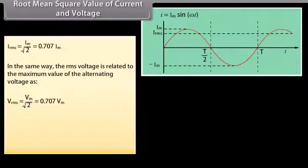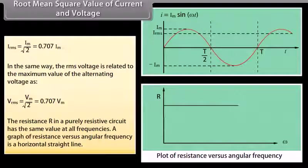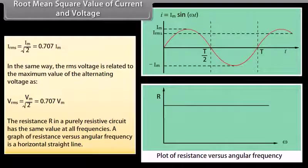In the same way, the RMS voltage is related to the maximum value of the alternating voltage: Vrms = Vm/√2 = 0.707 Vm. The resistance R in a purely resistive circuit has the same value at all frequencies. A graph of resistance versus angular frequency is a horizontal straight line.